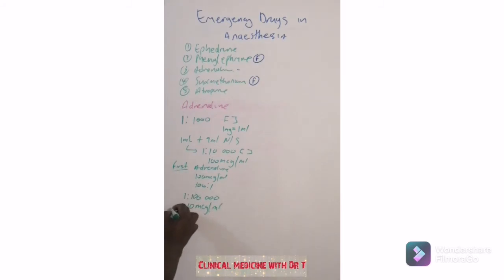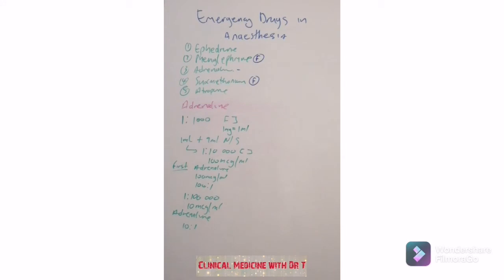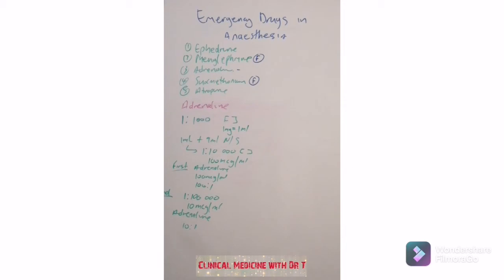That second syringe is going to be labeled adrenaline 10 micrograms to 1 mL. This is the second 10 mL syringe; this is the first. Basically, at any given time you're going to have two syringes with adrenaline. The second one is the weaker one compared to the first, because it is more diluted.